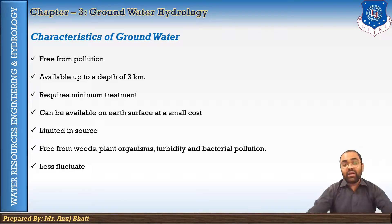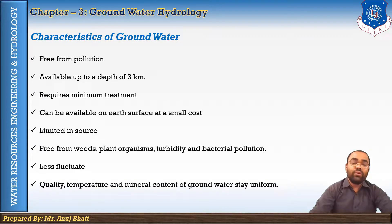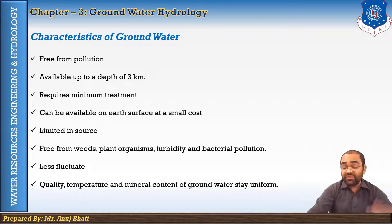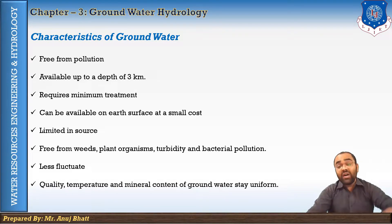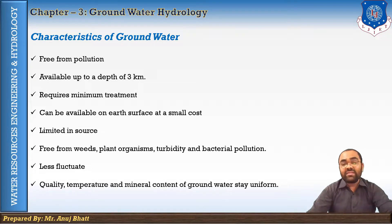Groundwater exhibits less fluctuation in alternate wet and dry seasons compared to surface water, so there is a very low possibility of dry season shortage. It is also uniform in quality, temperature, and chemical composition — it maintains its mineral content as compared to surface water. Surface water may get polluted or vary in mineral content, but groundwater maintains its mineral content, quality, and temperature. These are the characteristics of groundwater.